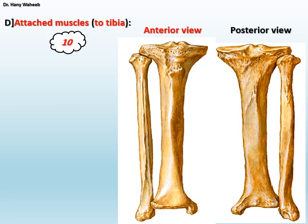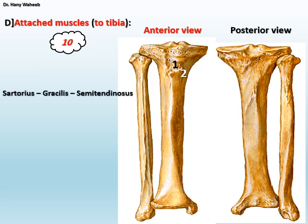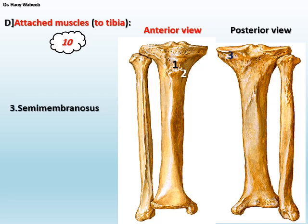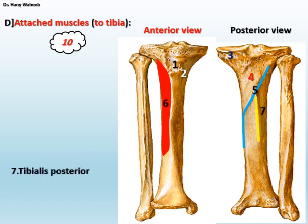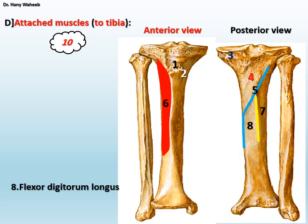Ten muscles are attached to the tibia. Number one: ligamentum patellae. Number two: insertion of SGS — sartorius, gracilis, and semitendinosus, arranged from before backward. Number three: insertion of semimembranosus muscle into a groove on the back of the medial condyle of the tibia. Number four: insertion of the popliteus muscle. Number five: origin of soleus muscle. Number six: origin of tibialis anterior. Number seven: origin of tibialis posterior. Number eight: origin of flexor digitorum longus. Number nine: the attachment of the iliotibial tract to the front of the lateral condyle of the tibia.